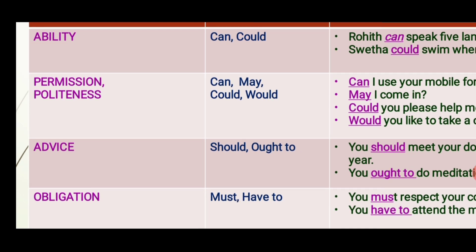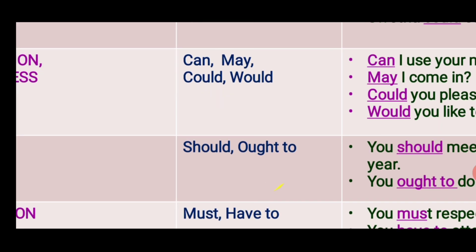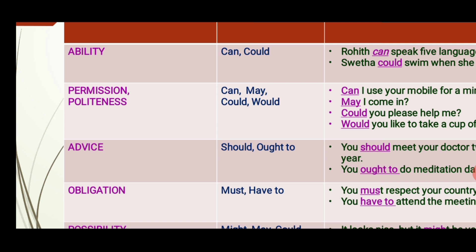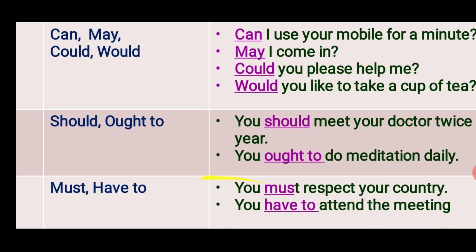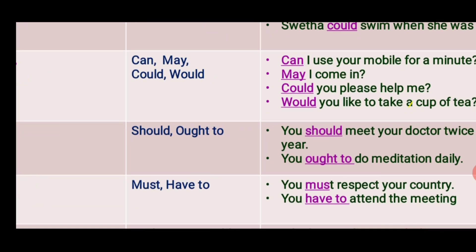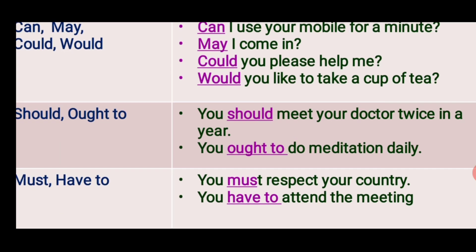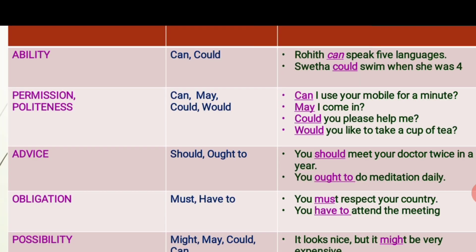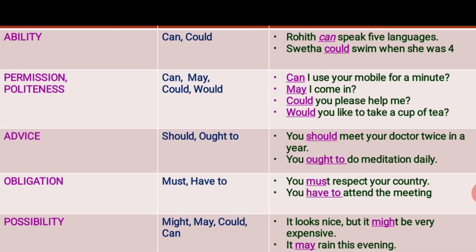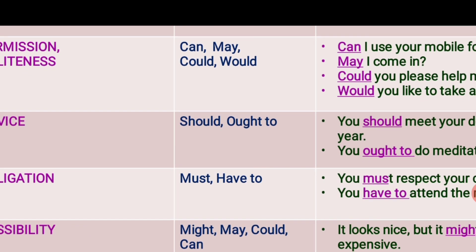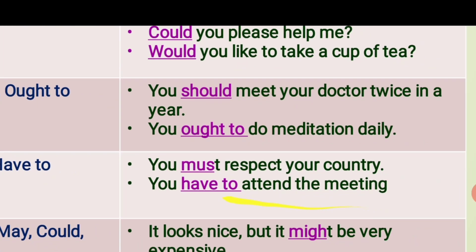The next type is advice, expressed by 'should' and 'ought to'. Example: You should meet your doctor twice a year — it's obviously a suggestion or advice. Another example: You ought to do meditation daily. That is also a kind of advice to someone.